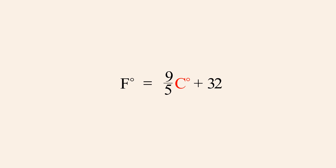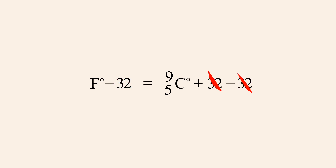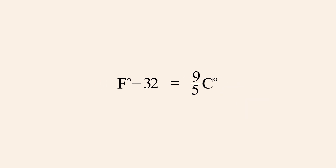The first step is to isolate the term containing C on one side of the equation by moving all the terms which do not contain C to the other side. Subtracting 32 from both sides of the equation allows us to eliminate the 32 on the right side. We say that the terms 32 and negative 32 cancel since together they equal zero. Eliminating these terms on the right accomplishes our goal of isolating the term containing C.